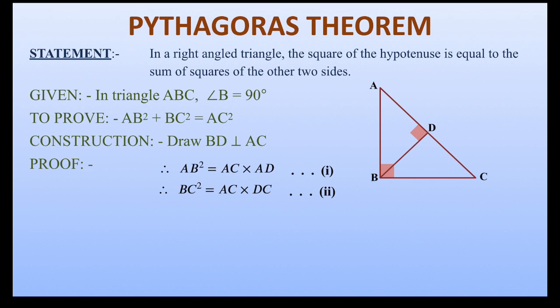Now looking at these results and what we need to prove, we have to add these two results. So, adding equations 1 and 2, we get on the left-hand side AB² + BC². And on the right-hand side AC × AD + AC × DC.